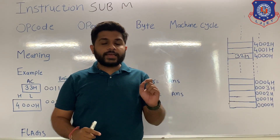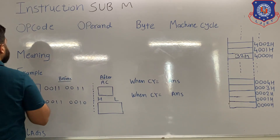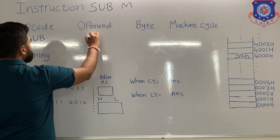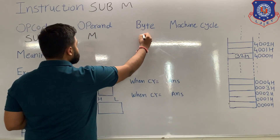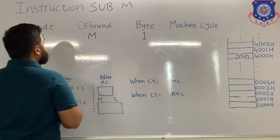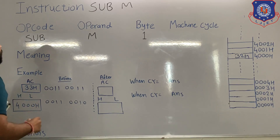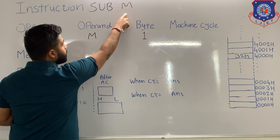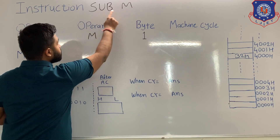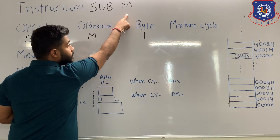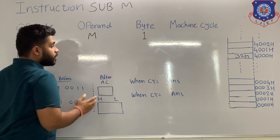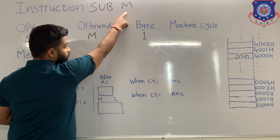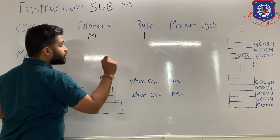Now let's see the instruction SUB M. For this instruction, the first part 'SUB' is the opcode and the remaining part 'M' is the operand. No data is present, so this instruction is 1 byte. SUB M means subtract the content of the memory location from the accumulator, and the answer will be stored in the accumulator. Whenever M is specified in the instruction, it means the memory location specified in the HL pair.